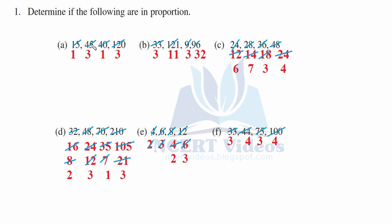Part a: 15 is to 45. The simplest form is 1 is to 3 — since 1 fifteen is 15 and 3 fifteens are 45. Here the zeros get cancelled and 4 ones are 4, 3 fours are 12. Therefore they are equal, therefore we can say they are in proportion.